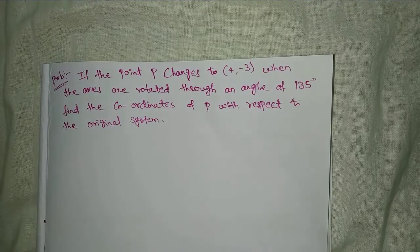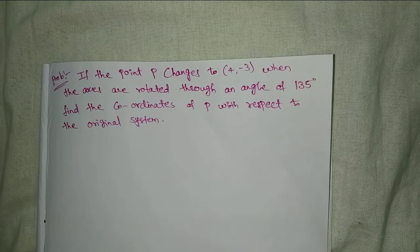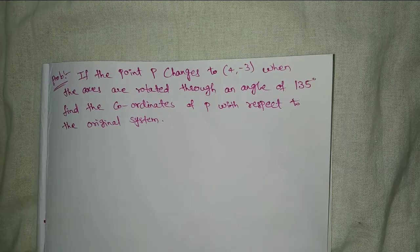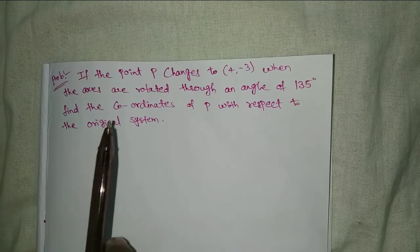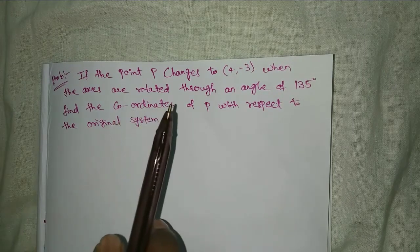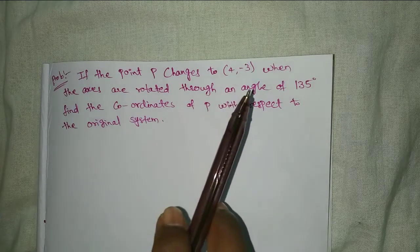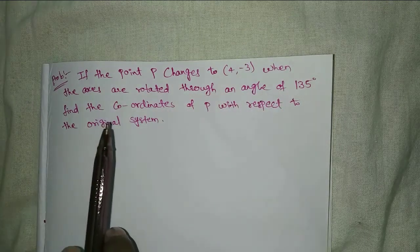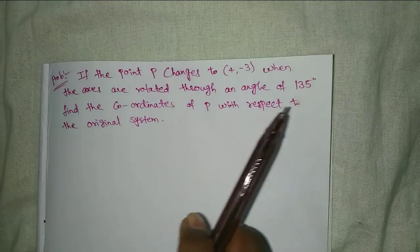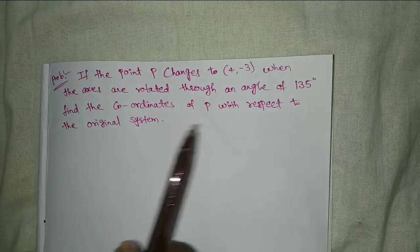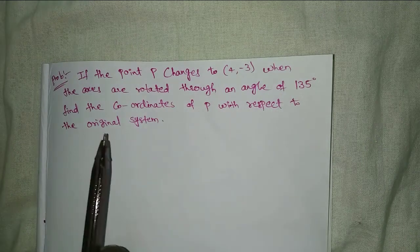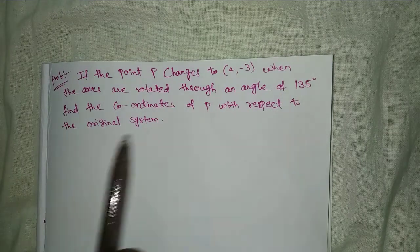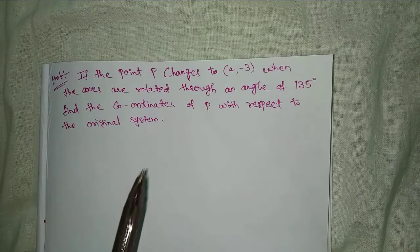Welcome to Rajesh Lekalu. Today our topic is Transformation of Axes. If the point P changes to (4, -3) when the axes are rotated through an angle of 135 degrees, find the coordinate of P with respect to the original system.